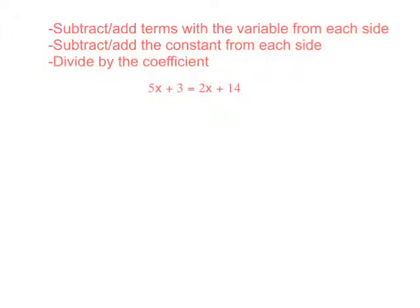Here are the steps. The reason it says subtract or add is because it depends on what you have. The basic steps to solving these: remember, whatever you do to one side, do the other. The first step is to get rid of the extra variables, because when you have letters on both sides, you want to get them on just one side first.